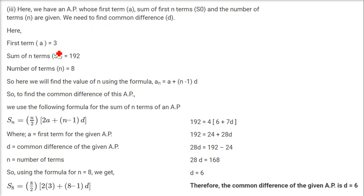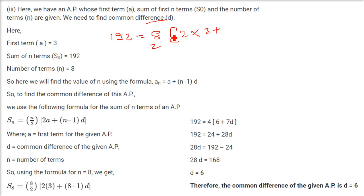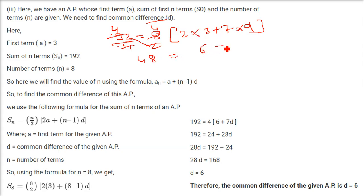Next sub-problem: A, N = 8, and Sₙ = 192 are given; find D. Using Sₙ = (N/2)×[2A + (N−1)D]: 192 = (8/2)×[2×3 + 7D] = 4×[6 + 7D]. So 48 = 6 + 7D, giving 7D = 42 and D = 6.